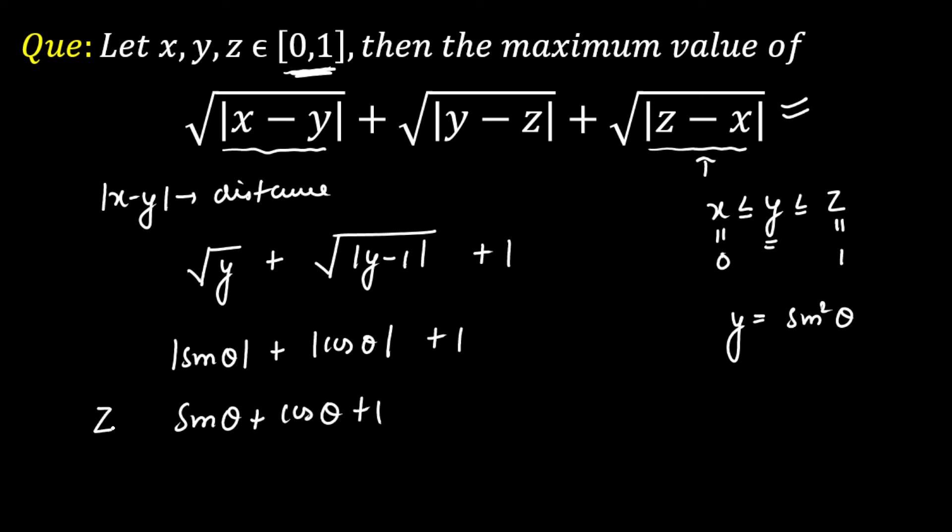Now let's say this is equal to z, and the maximum value of z will be, as you know, the maximum value of a sin theta plus b cos theta will be the maximum value will be root over a square plus b square. Now in this case it will be equal to root over 2 plus 1. So our maximum value will be root over 2 plus 1.